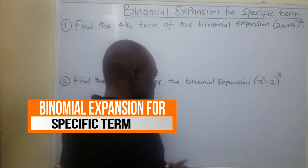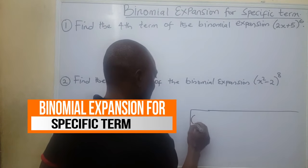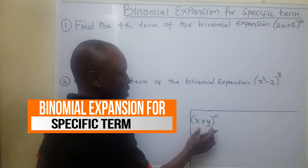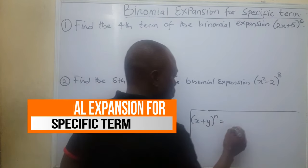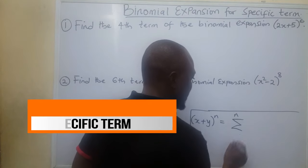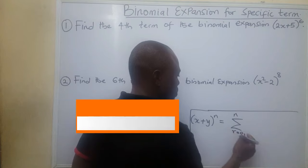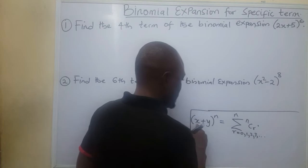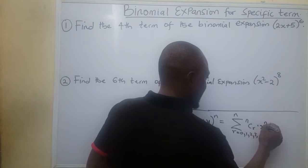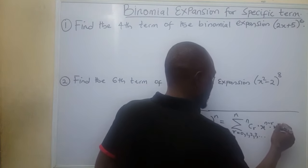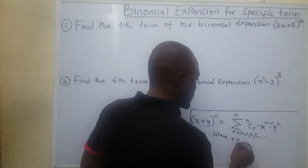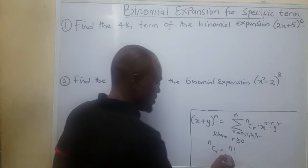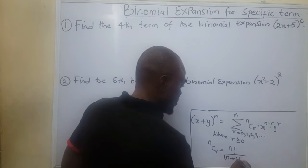Now this is what the formula looks like. If I have x plus y to the power of n — so this is my binomial, which contains two terms — raised to a power, it will be the summation where r starts from 0, 1, 2, 3, and so on, of n combination r, times the first term x to the power of n minus r, times the second term y to the power of r, where r is greater than or equal to 0. And n combination r simply means n factorial divided by n minus r factorial times r factorial.